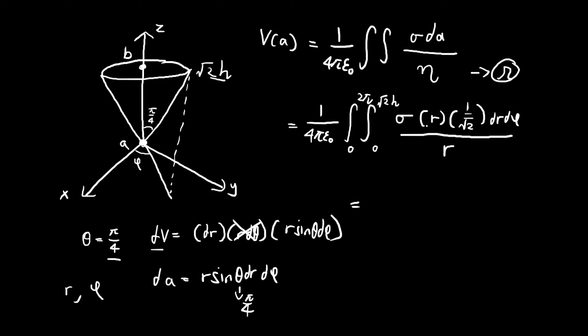Evaluating this is easy enough. The r's cancel out, so you have an extremely simple integral. We just write out the constants: square root of 2 times h and 2 pi. We can simplify this: we get sigma h over 2 epsilon. This is the potential at point A.